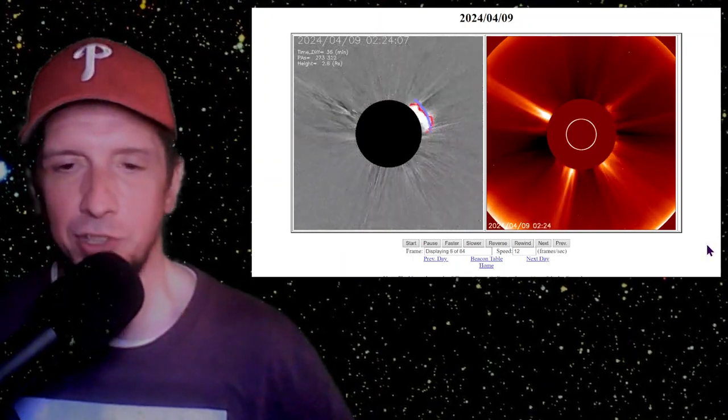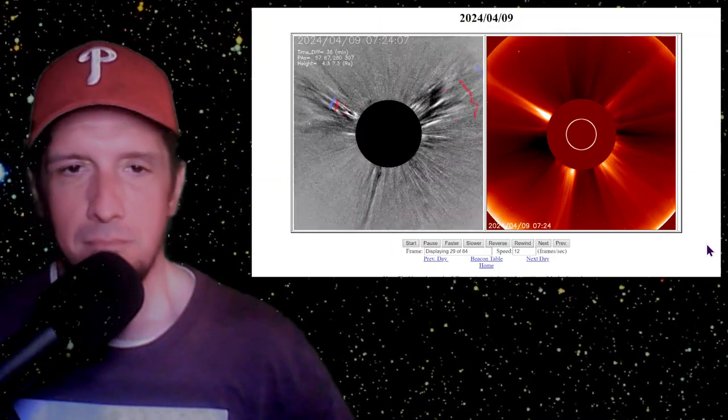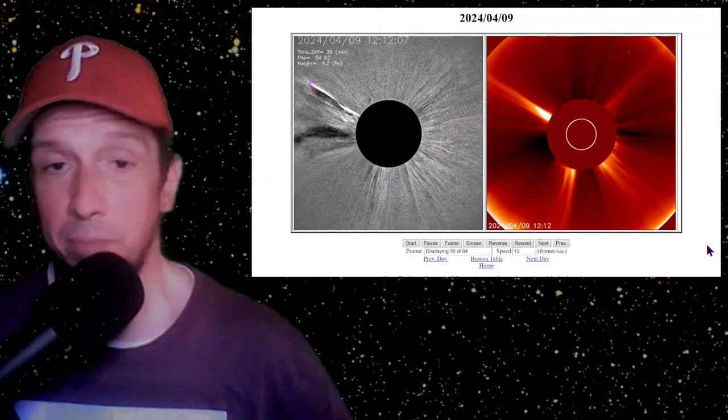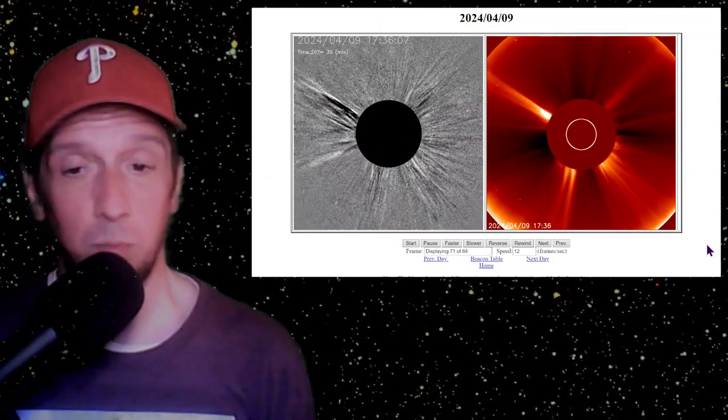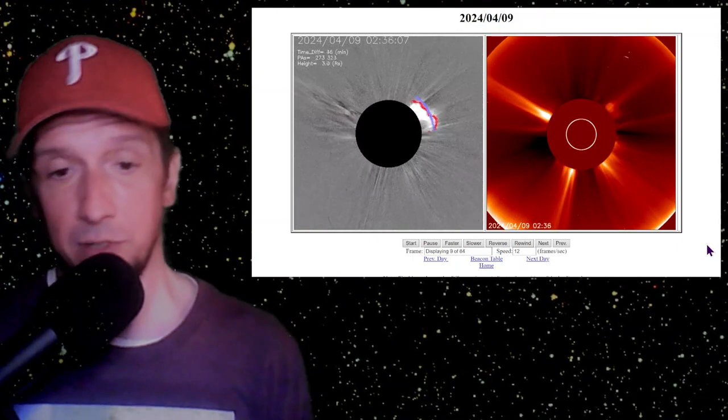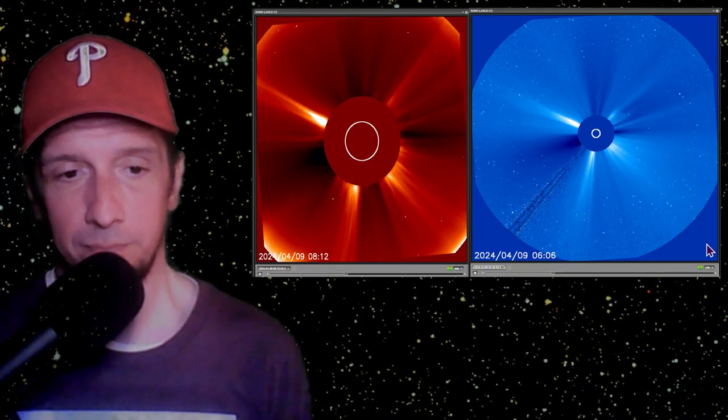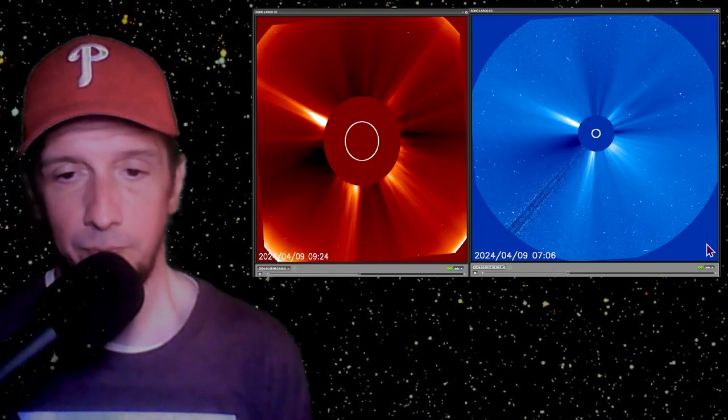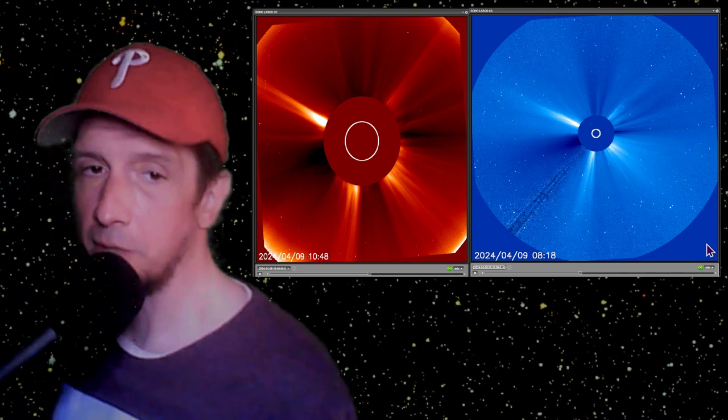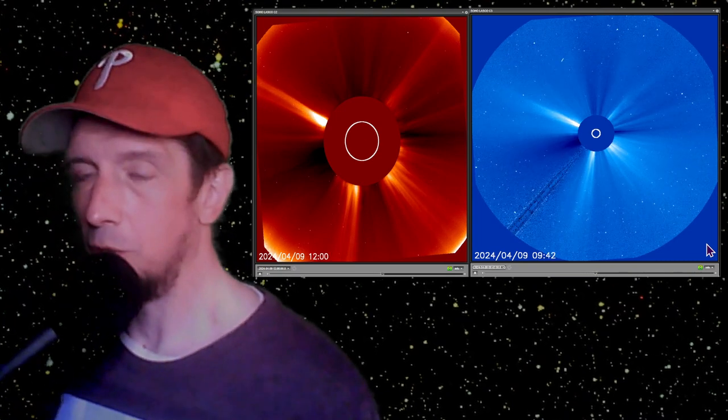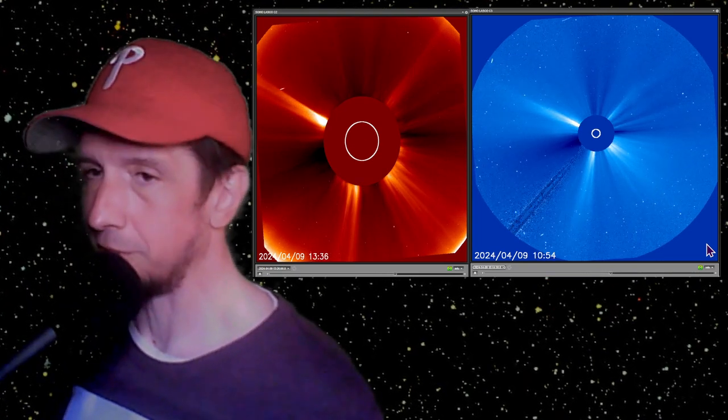So there you go, coronal mass ejections. There have been some. Are they earthly directed? Well, not really, no they aren't. Here we'll show the C3 as well as the C2. You'll probably come to the same conclusion that I did. Those don't look like earthly directed coronal mass ejections.